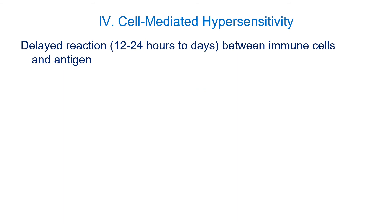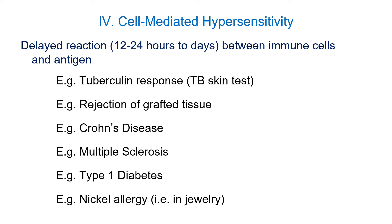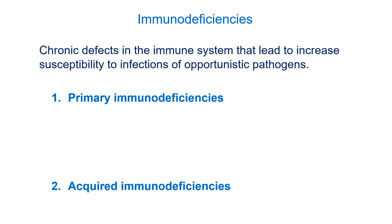The fourth type is cell-mediated hypersensitivity. These tend to be a little bit slower, based on the part of the immune system being activated. These are often called autoimmune diseases. Examples include the tuberculosis skin test — which you likely had as an entering nursing student, with results checked 12 to 24 hours later, reflecting that characteristic delay. Other examples include Crohn's disease, multiple sclerosis, and type 1 diabetes, where various tissue types are damaged due to an immune reaction.